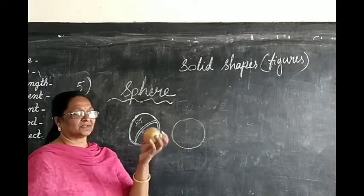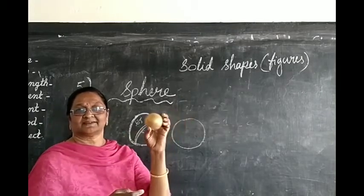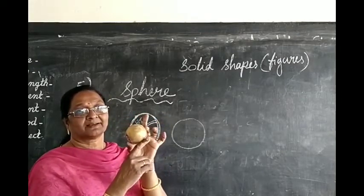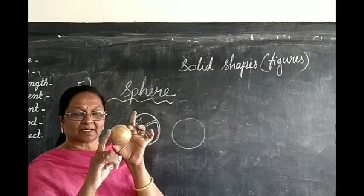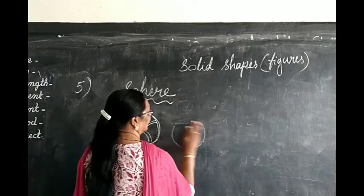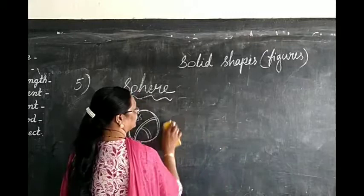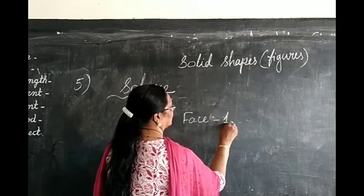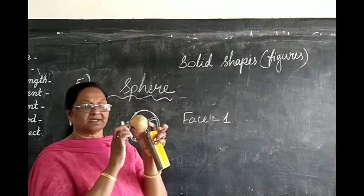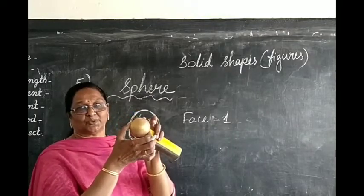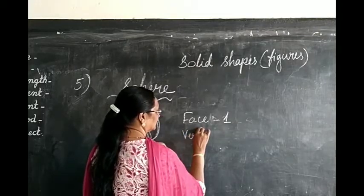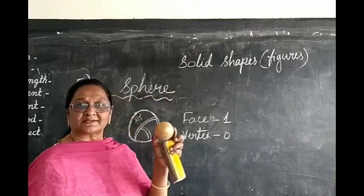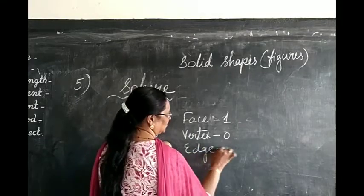Tell me what are the features of the sphere. Is there any face you can see? Yes, there is one curved surface. So it is having one curved face. Any corners? No. That means no corners — zero. Any edges? No. Edge also zero. So a sphere has one curved face, no corners, and no edges.